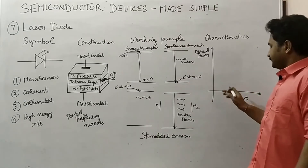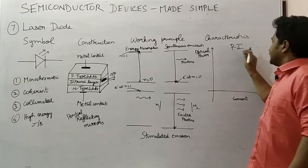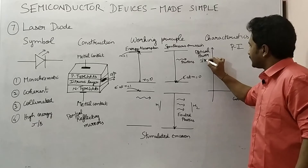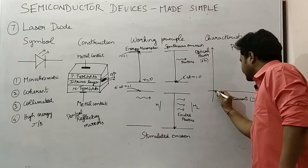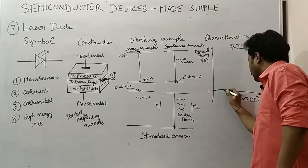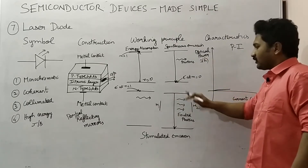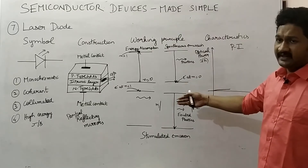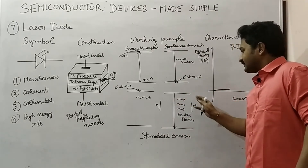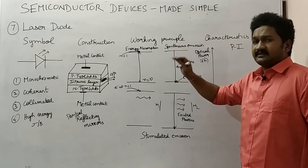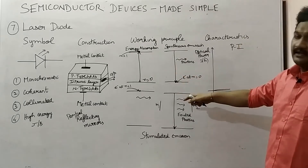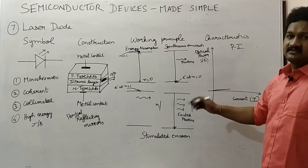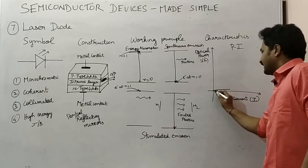When we come to the characteristics, this is called the P-I characteristics — power and current characteristics — where the x-axis is the current and the y-axis is the power whose unit is joule per second. As supply is given, current starts increasing. After placing the mirrors, photons are excited and more and more recombination takes place. The recombination time is reduced compared to before placing the mirror, because the excited photons are in phase with each other.